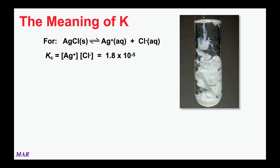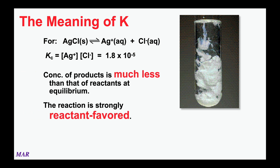Here's a reaction: silver chloride, which is a solid, breaking down into the ions silver-plus and chloride. This K, which is a Kc because these are solutions - silver ion concentration times chloride ion concentration - is 1.8 times 10 to the minus 5, a pretty small number. This K is a lot less than 1, so this reaction is going to be very reactant-favored. Once equilibrium kicks in, you're going to have more AgCl solid than silver ions and chloride ions. K will never be zero or negative, but they can get really, really small.